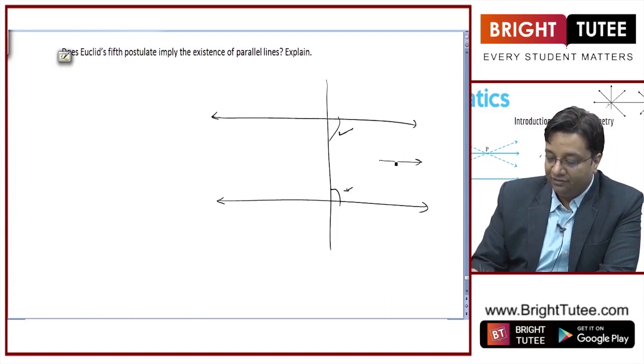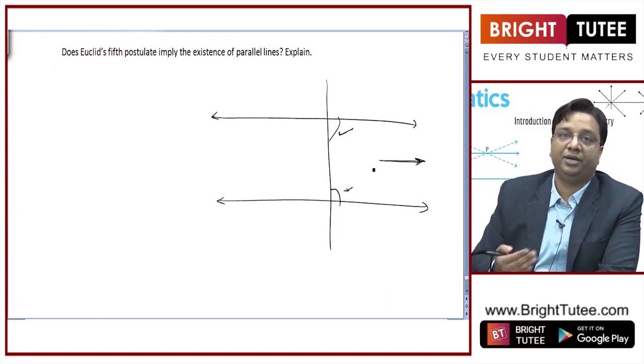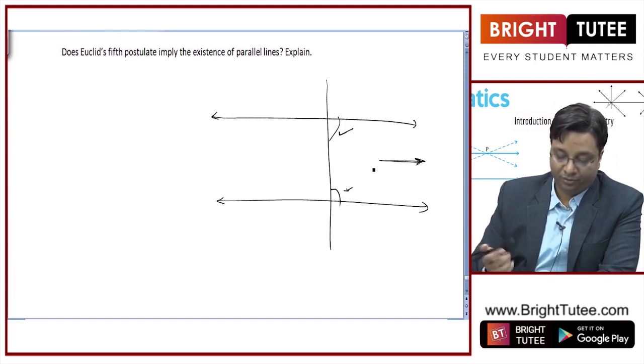In case their sum is 180, they will never meet. So it is a direct implication of Euclid's fifth postulate.